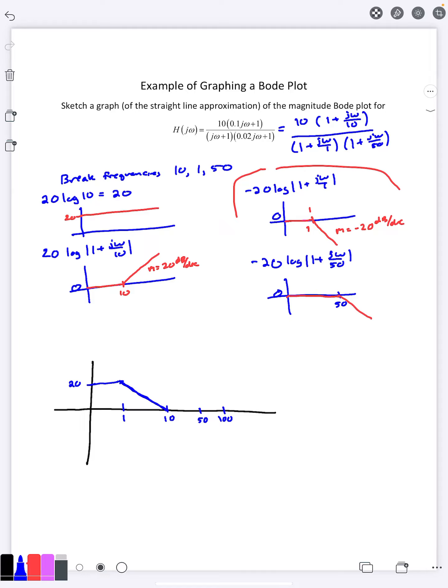At that point, I get a second break frequency of 10 right here, which means I'm now going to add 20 to the slope. Well, if the slope was negative 20 and I add 20 to it, that means my slope is 0, which means it's going to be flat. So this part has an m equals 0.